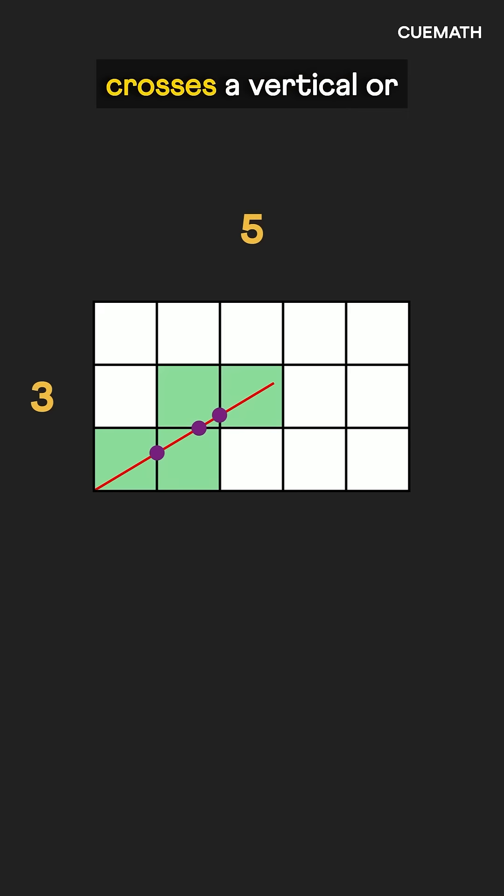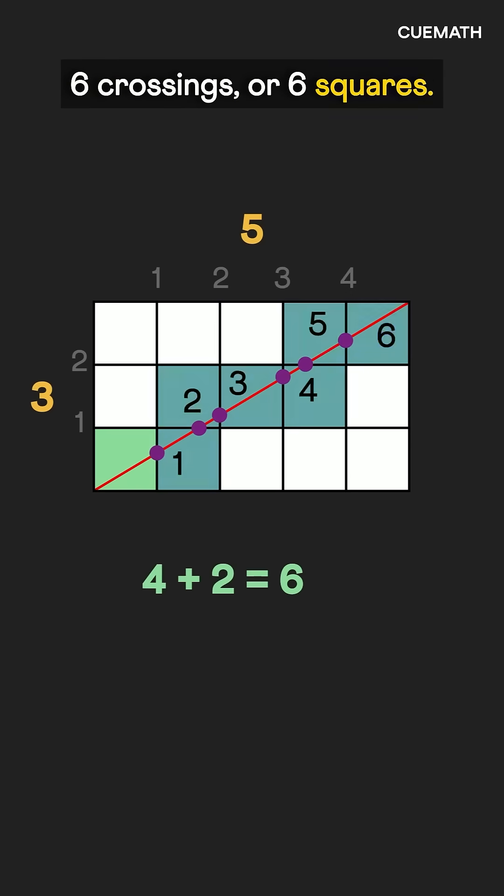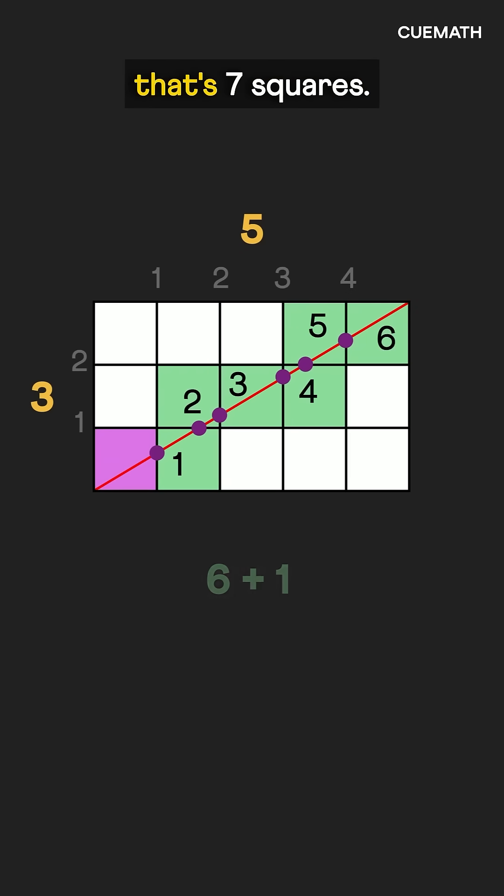Each time the diagonal crosses a vertical or horizontal grid line, it enters a new square. In a 3 by 5 rectangle, it crosses two horizontal and four vertical lines, six crossings or six squares. Including the starting square, that's seven squares.